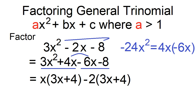For negative 6x minus 8, the greatest common factor is negative 2. Factor out negative 2; the other factor is 3x + 4.